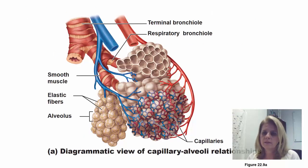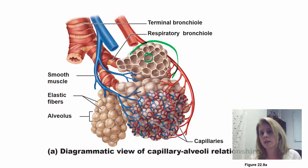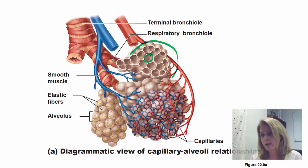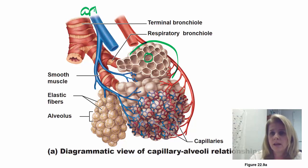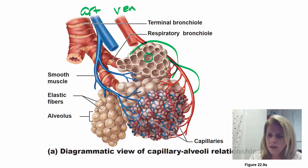Looking at this, you can see the alveolar sac with each individual alveolus connected together. There are pores between each sac so air can move in between. For gas exchange, you have capillary beds. The arterial side is blue — deoxygenated blood coming to pick up oxygen. The venous side picks up the oxygen and takes it back to the heart.